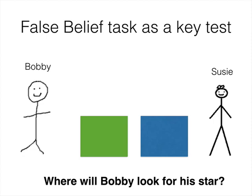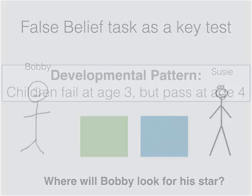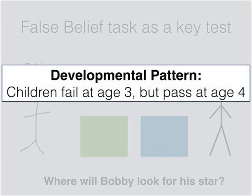Using this method, researchers have found a robust developmental pattern where three-year-olds tend to fail and four-year-olds reliably pass. This finding has led to theoretical accounts that emphasize a strong conceptual shift in children's theory of mind abilities. But is there evidence of earlier false belief understanding in infancy?